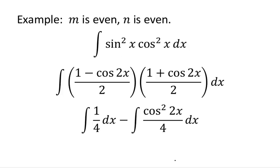Here's a case where you have two functions of even power. We substitute according to the half angle identity: 1 minus cosine of 2x over 2 and 1 plus cosine of 2x over 2.